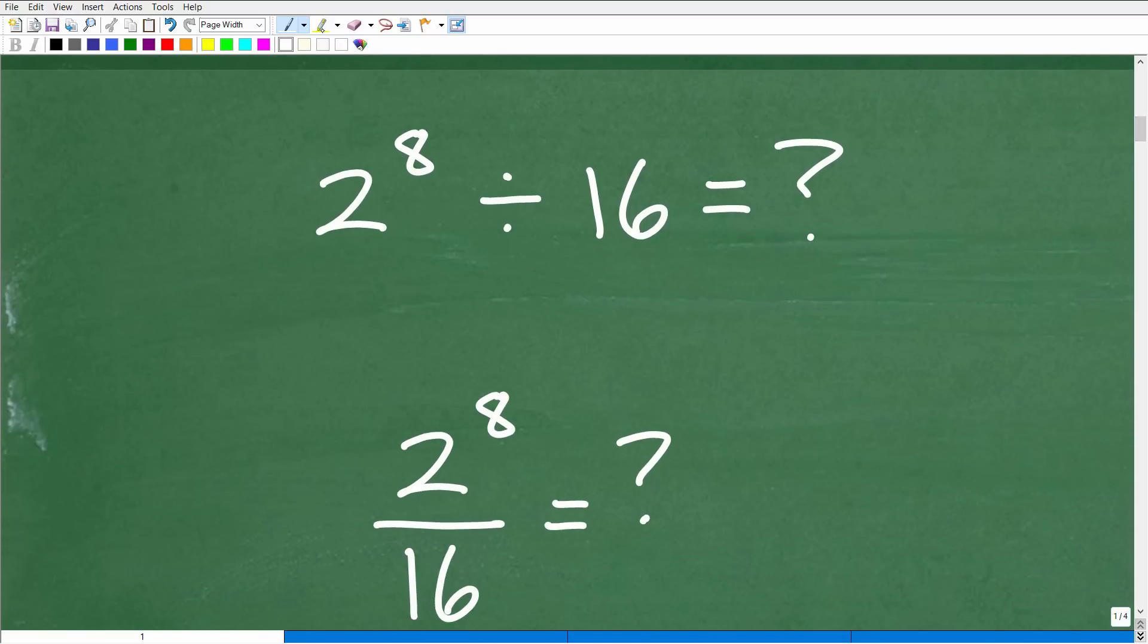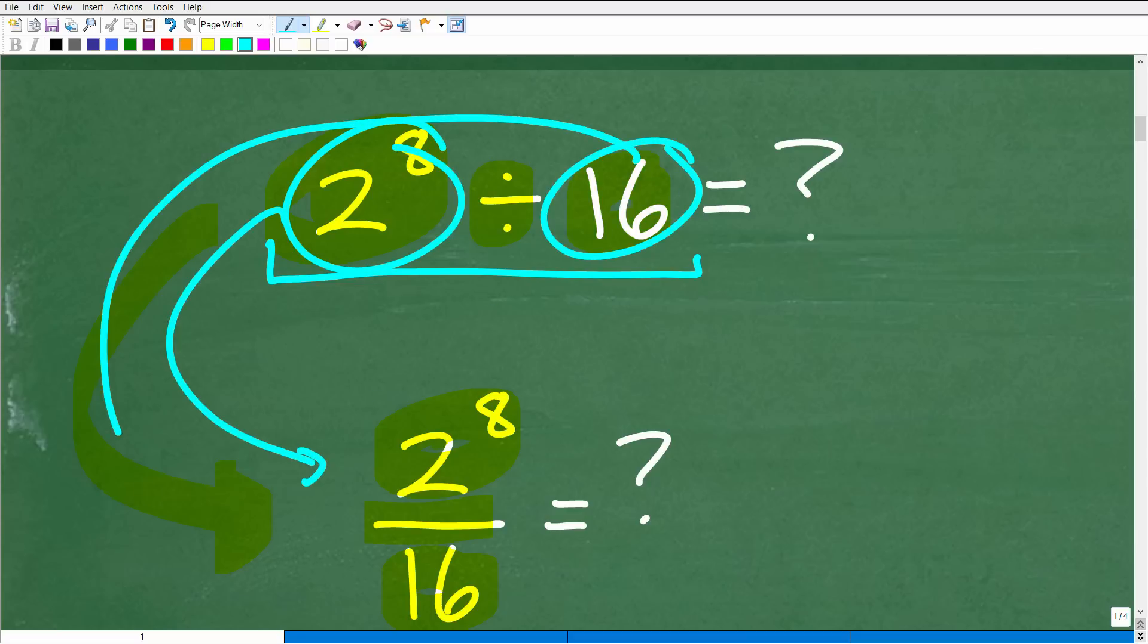All right, so first thing that we want to recognize is we have 2 to the 8th divided by 16. Now of course this is a division problem, but this is also a fraction problem. Fractions are in fact division problems, if you will, because we're taking a numerator and dividing it by a denominator. So what we want to do, and you don't have to do it this way but I'm going to suggest that you do, is rewrite division problems or be able to think of division problems as fractions. So this would be the numerator and the 16 would be the denominator. So the first thing I'm going to do is go ahead and rewrite the problem like this.